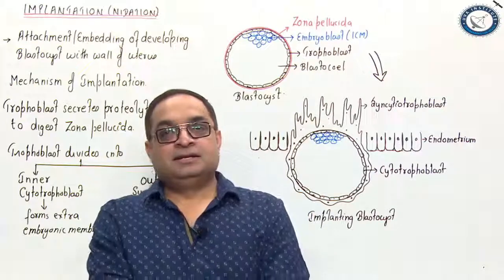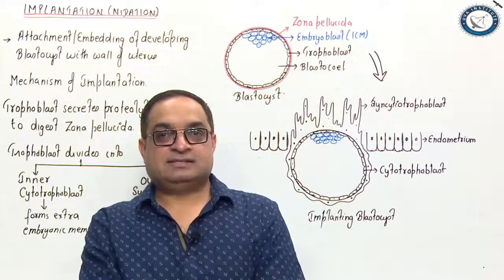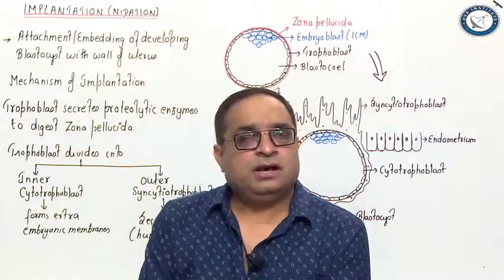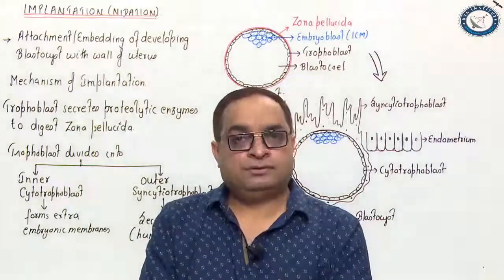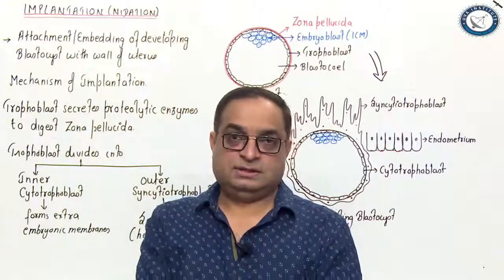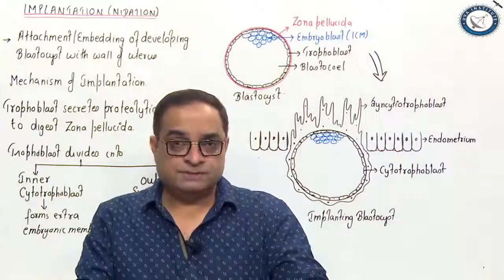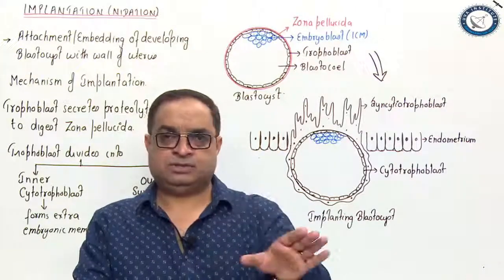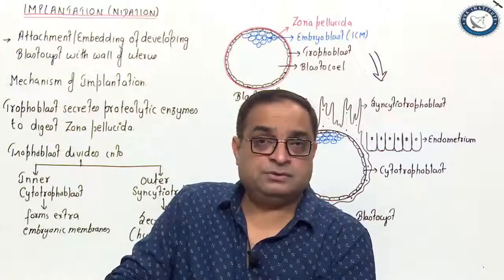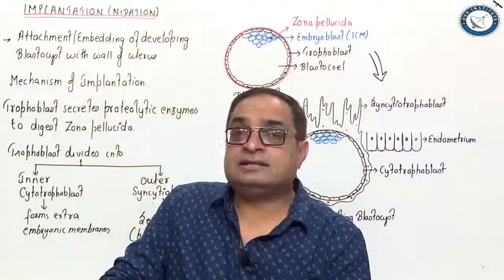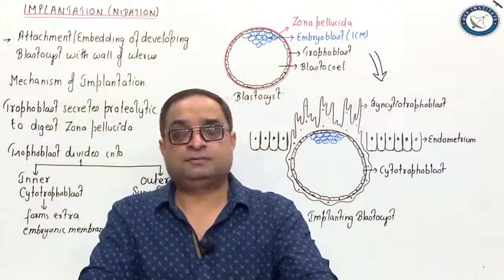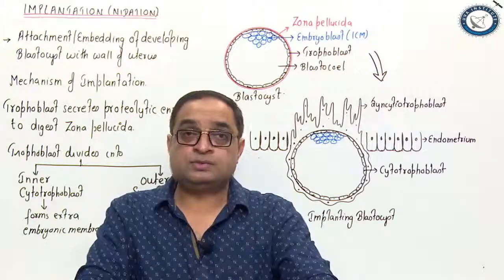Hello students. Today, the topic which we will be discussing is implantation, which is also called cnidation. Fertilization happens in the ampulla of the fallopian tube, and after fertilization, the zygote starts undergoing cleavage divisions. The dividing zygote keeps moving towards the uterus and it takes nearly four days to reach it. In the uterus, it keeps floating for nearly three days, absorbs nutritive substances, and then attaches with the wall of the uterus.